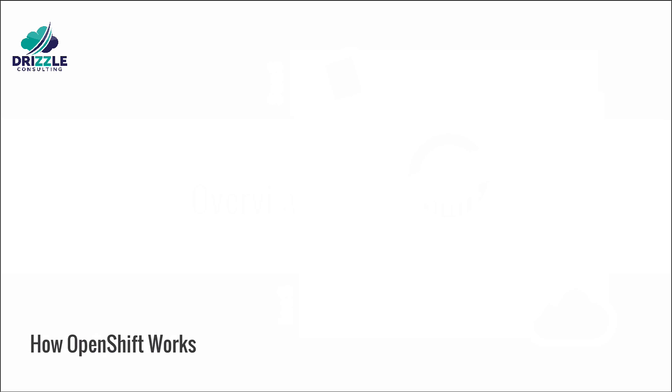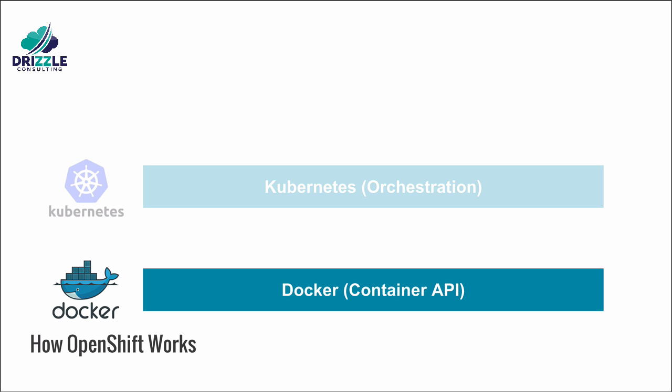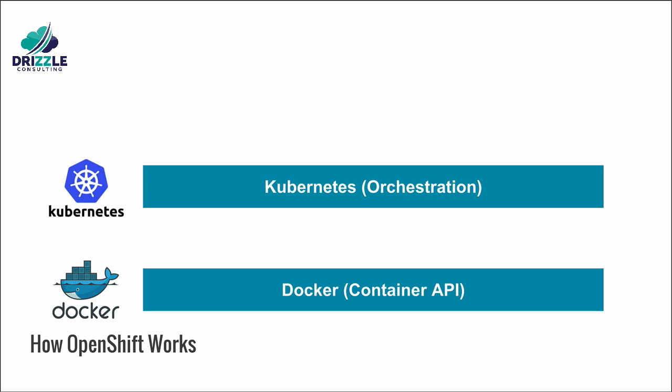OpenShift is built on top of core technologies: Docker-based containers and the Kubernetes system for orchestration. Let's have an overview of these two technologies to better understand how OpenShift works.